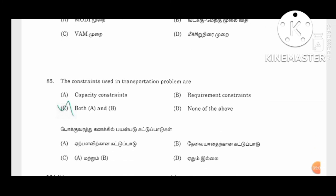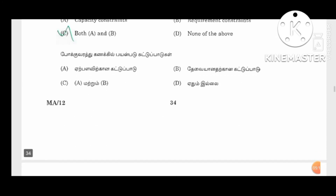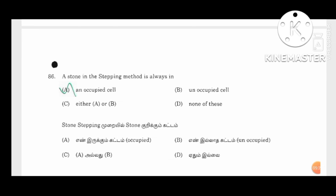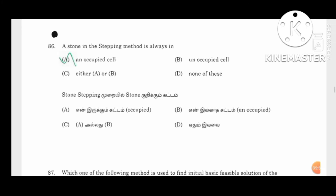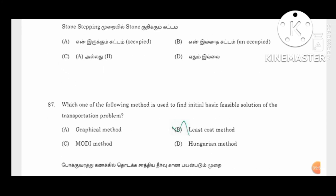The transportation problem uses capacity constraints and requirement constraints — both capacity and requirement, option A and B. The next point is the store and base in unoccupied cells. The following method used to find the initial basic feasible solution for the transportation problem is the least cost method.